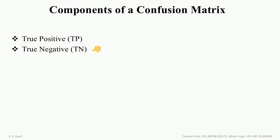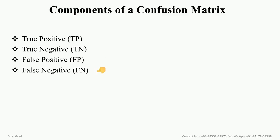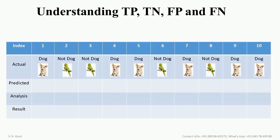The second is true negative, abbreviated as TN. The third one is false positive, abbreviated as FP. And the last fourth is false negative, abbreviated as FN. Now, let's try to understand these 4 components.